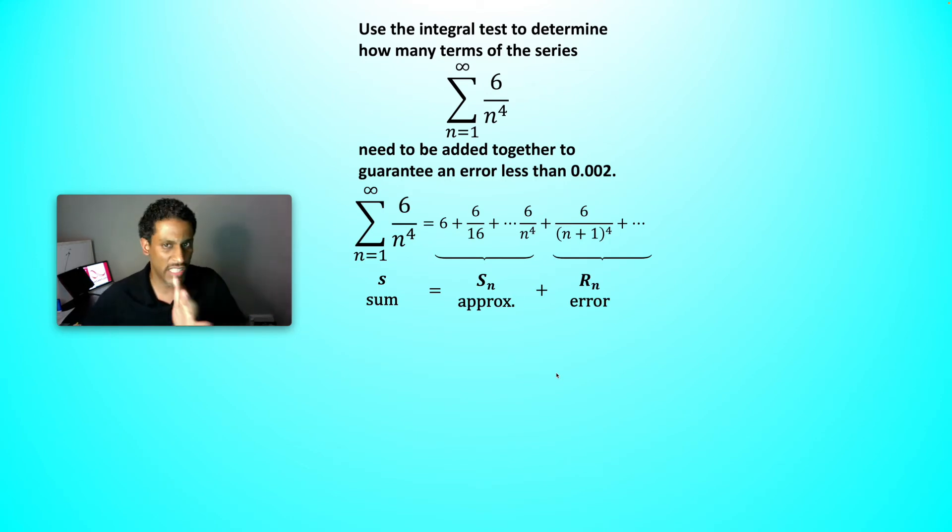We'd like for that remainder, the n plus first term off to infinity, to be less than 2 over a thousand so that we're within that range of the actual sum when we do our approximation. So how many terms? Two terms? Three terms? Four terms? Is that enough? Let's find out.